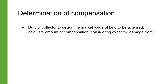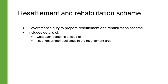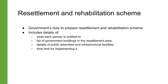The collector has to determine the market value of the land to be acquired and calculate the total amount of compensation to be paid to the landowner. Parameters to be considered also include the damage expected to be sustained because of the loss of land, the loss of crops, and the change of residence. The government must also prepare a rehabilitation and resettlement scheme that includes details of entitlements, the list of government buildings in the resettlement area, public amenities and infrastructural facilities to be provided, and the time limit for implementing it.